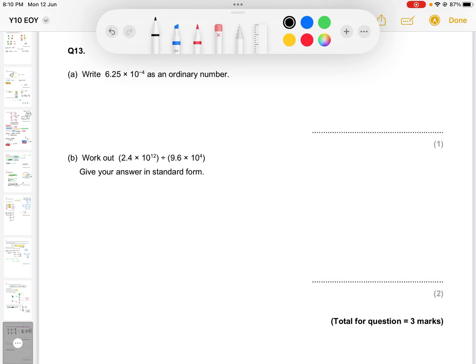Question 13. Write 6.25 times 10 to the power of negative 4 as an ordinary number.